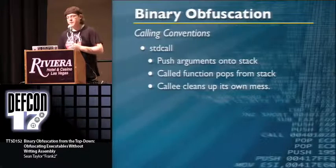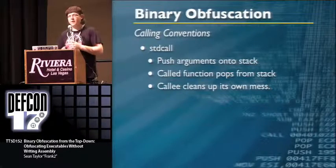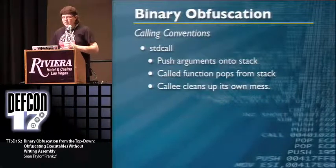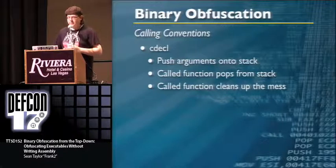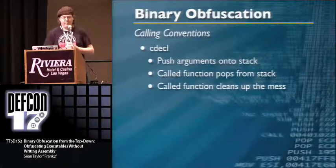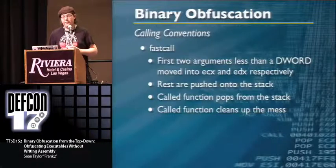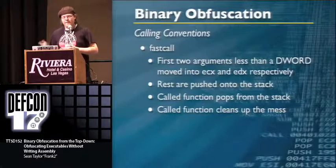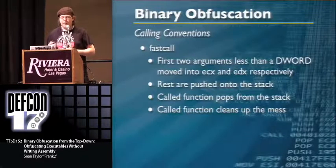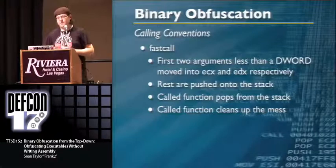For stdcall: arguments are pushed onto the stack, the called function pops everything, and the caller cleans up. Cdecl is the inverse: the called function pops from the stack and cleans up its own mess. Fastcall pushes the first two arguments into registers — avoiding stack access for those — then the rest go onto the stack, and the called function pops and cleans up.